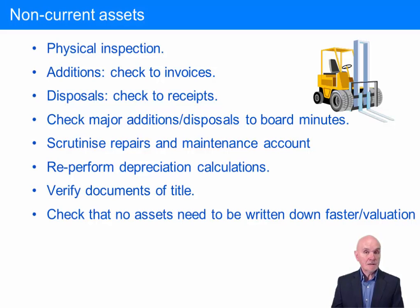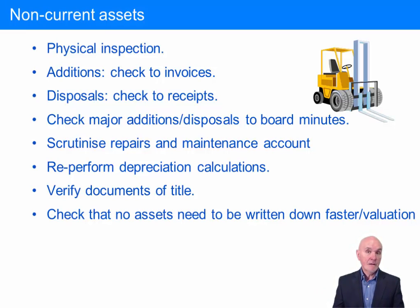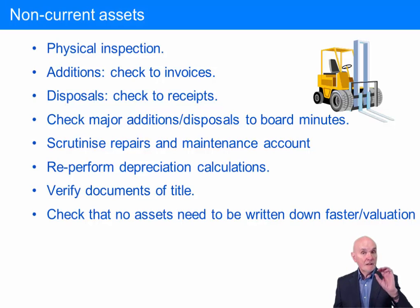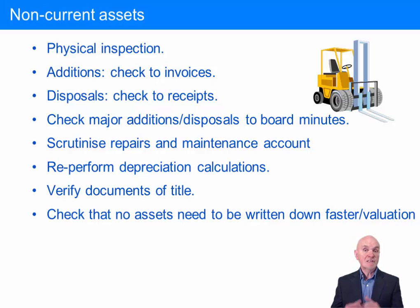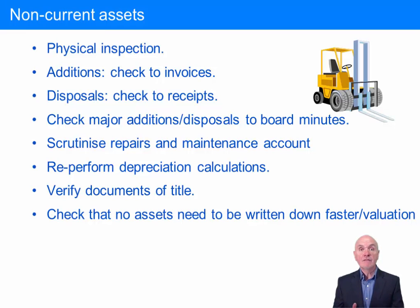Re-perform depreciation calculations. This cannot be done by simply taking the total balance of, say, computer equipment and multiplying by 20% — depreciating over five years. Some of that computer equipment may have been fully depreciated. You have to depreciate each asset individually and stop depreciation when you reach a zero net book value. You can test assets on a random sample basis, or this is perhaps tailor-made for computer-assisted audit techniques, allowing you to re-perform the depreciation calculation for all non-current assets.